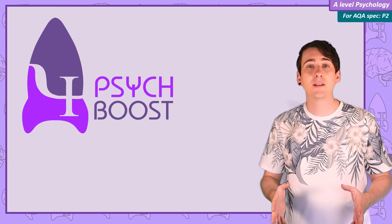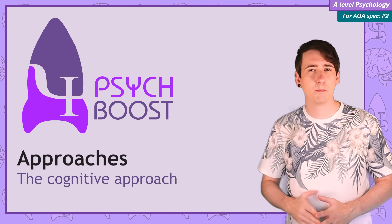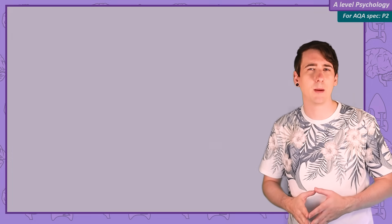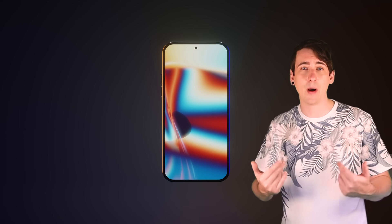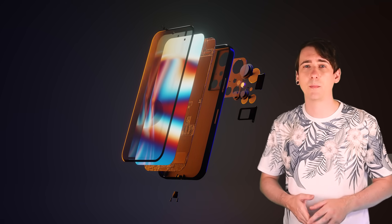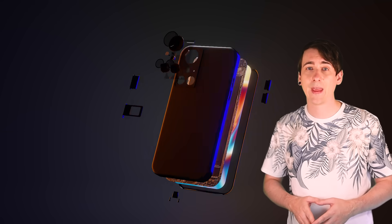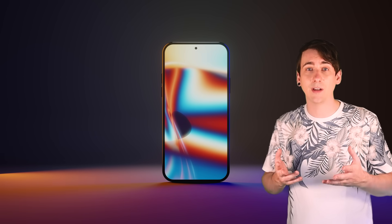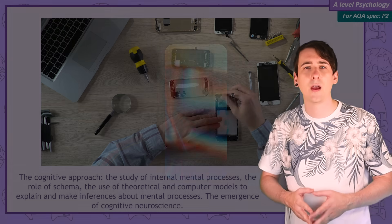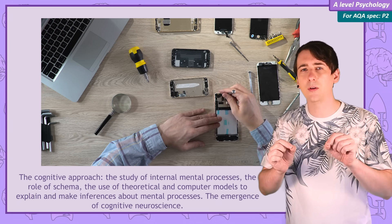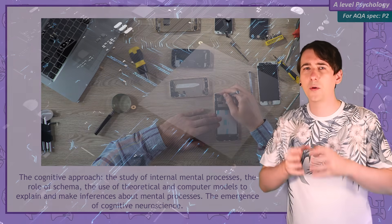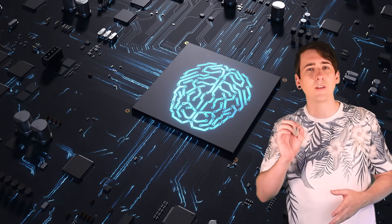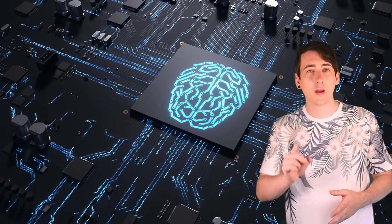Are you a computer? That might seem like a really silly question, but there are big similarities. If we imagine a phone, which is basically a portable computer, it has inputs like camera and microphone. You have similar inputs: your eyes and ears. It has outputs: a screen and speakers. You have similar outputs: your body and your voice. Your phone has a physical component that can hold on to and work with information — it's the CPU, the central processing unit. You have a physical component that can do the same: your brain.